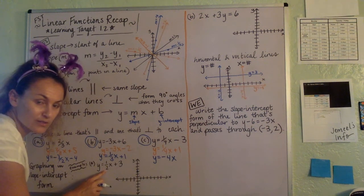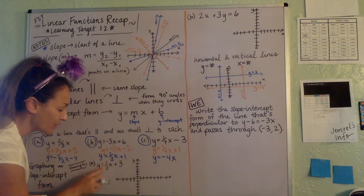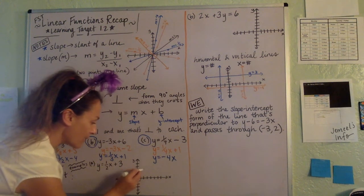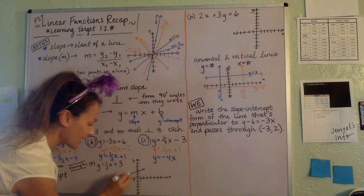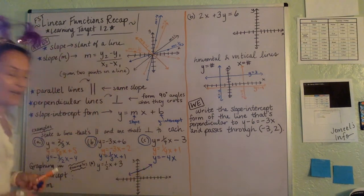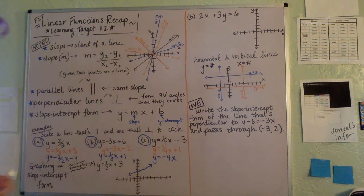And then the slope is 1 over 2, a rise of 1, a run of 2. So from there you go up 1 and over 2, connect the dots. And that is how you graph lines. Just a reminder.